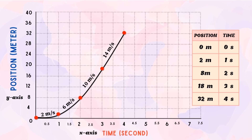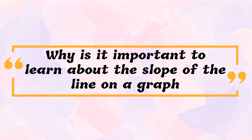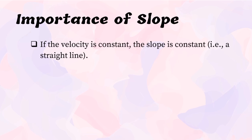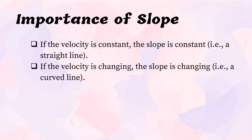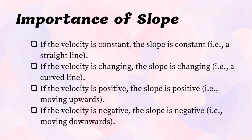This graph does not have constant motion but rather a changing velocity. The slope of the line on a position-time graph reveals useful information about the velocity of the object. If the velocity is constant, the slope is constant — a straight line. If the velocity is changing, the slope is changing — a curved line. If the velocity is positive, the slope moves upward. If the velocity is negative, the slope moves downward. The principle of slope can be used to describe the motion shown in a position-time graph.